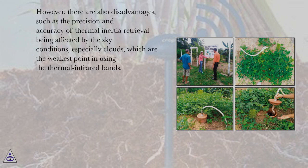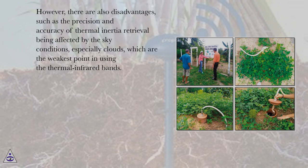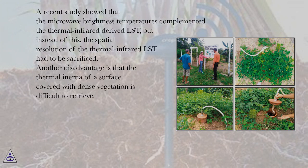However, there are also disadvantages, such as the precision and accuracy of thermal inertia retrieval being affected by sky conditions, especially clouds, which are the weakest point in using the thermal infrared bands. A recent study showed that microwave brightness temperatures complemented the thermal infrared-derived LST, but the spatial resolution of the thermal infrared LST had to be sacrificed.